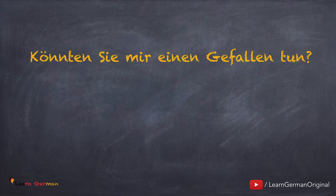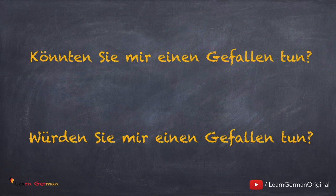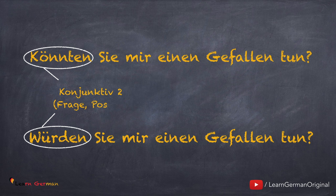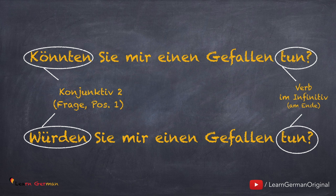Hier ist ein Beispiel mit dem Pronomen Sie: Könnten Sie mir einen Gefallen tun? Würden Sie mir einen Gefallen tun? As you can see, both sentences are in the form of questions, hence the verb is placed in the first position. The verbs are in the subjunctive form, that is, in Konjunktiv 2 — Könnten in place of Können and Würden in place of Werden. These forms make the questions more polite and friendlier.